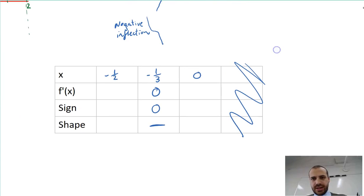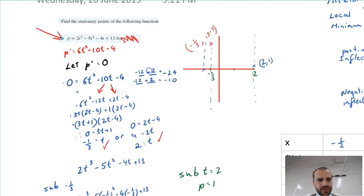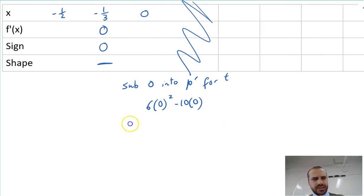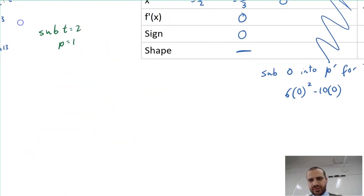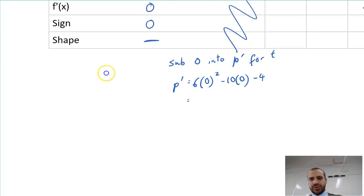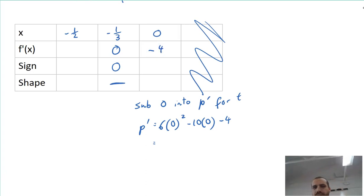Let's test the number zero first. To test the number zero, sub zero into p dash for t. 6t squared minus 10t minus 4. 6 times 0 squared minus 10 times 0 minus 4. p dash is going to be equal to minus 4. The sign is negative.